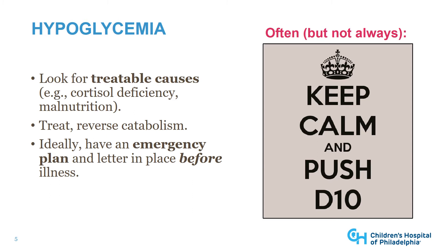Ideally, the blood sugar treatment plan is developed in collaboration with the endocrinologist and the mitochondrial disease specialist before the patient is in trouble. The emergency letter we provide to patients typically includes guidance on how to check blood sugars and what to do if blood sugars are low. Over time, as we gain experience with how patients respond to the emergency plan, we adapt accordingly.